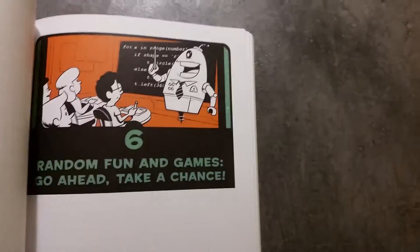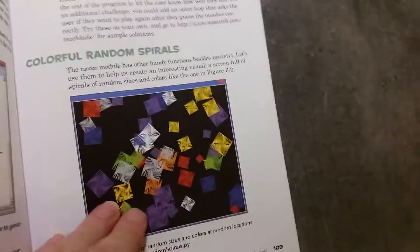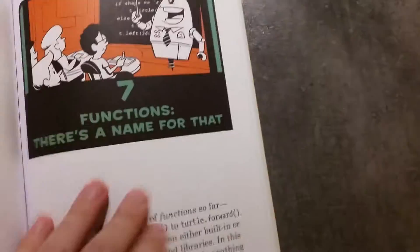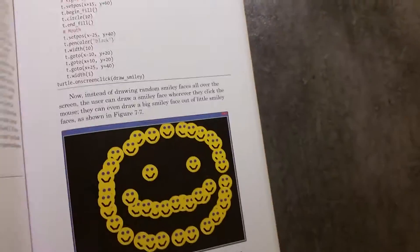And then we look at conditions. These are if statements. And then they start to show you how to program games. There's a guessing game there. They also do at some point rock, paper, scissors. And then as we get further through, they start using Pygame to really make some interesting and rewarding games at the end of the book.